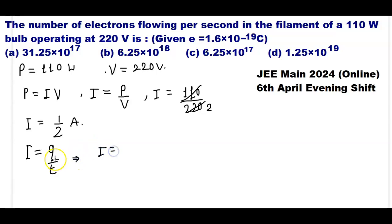I is equal to, in place of Q we can put, number of electrons into charge of electron into time. And we know that I am able to calculate the number of electrons flowing per second.